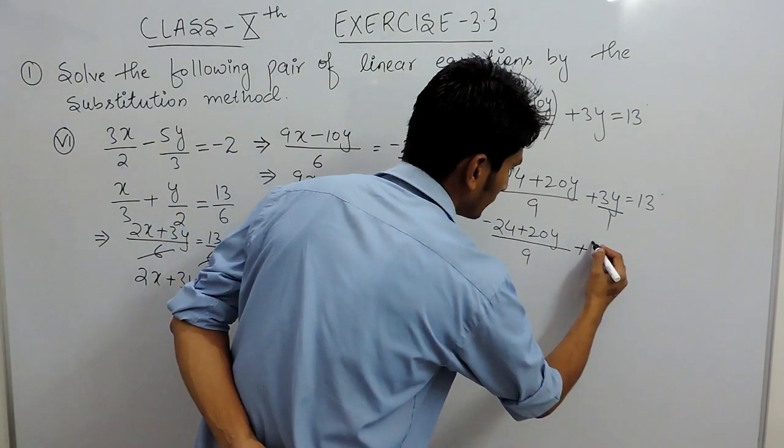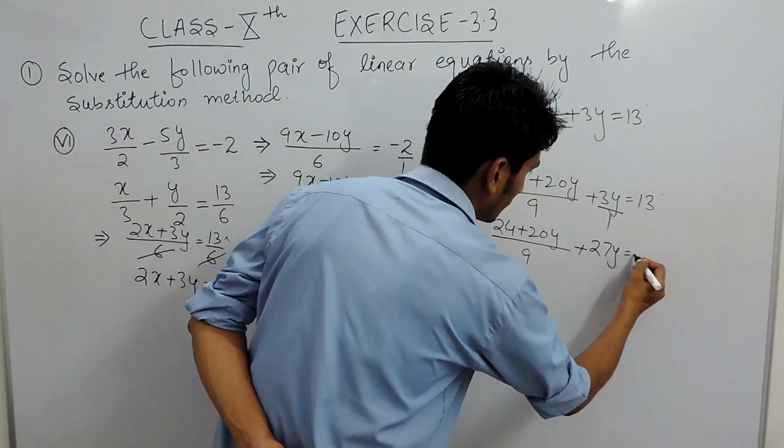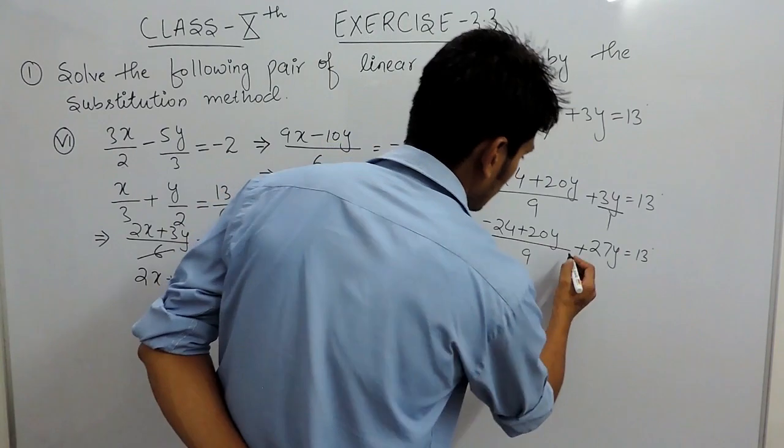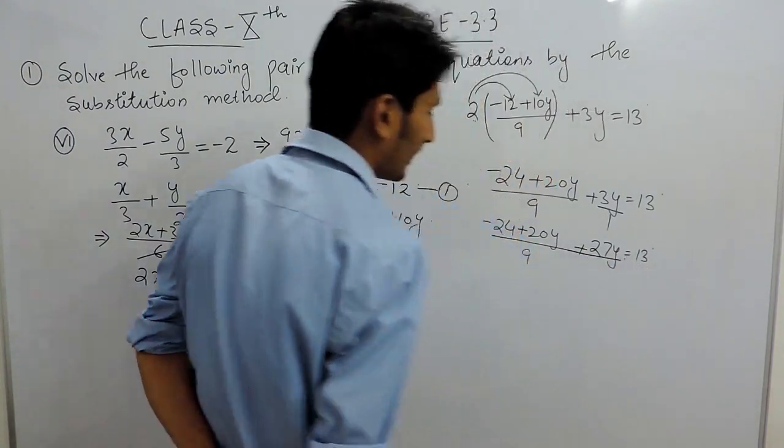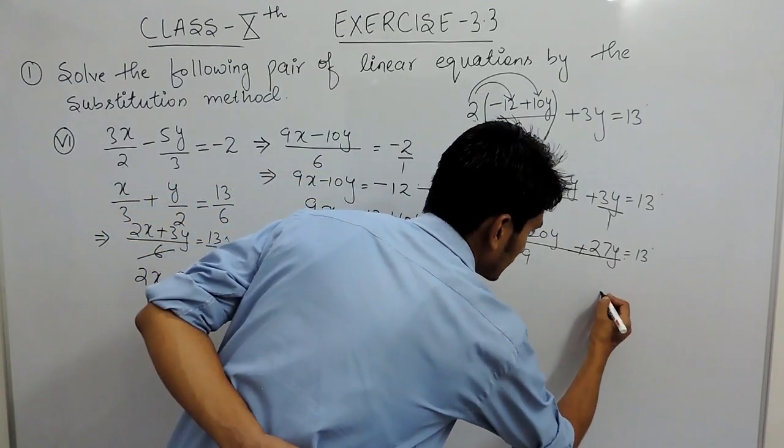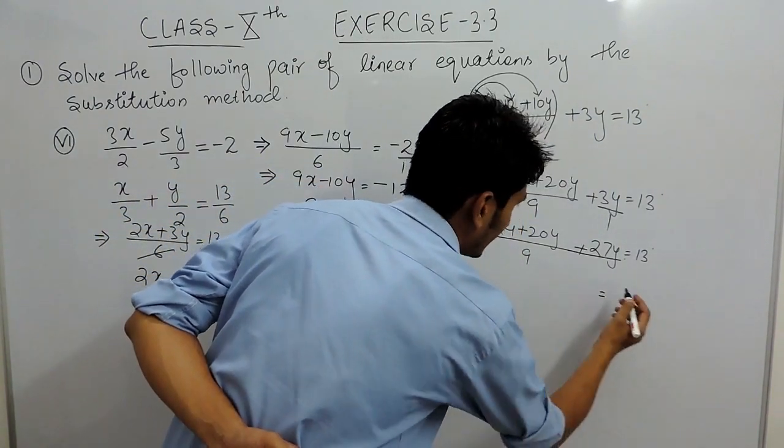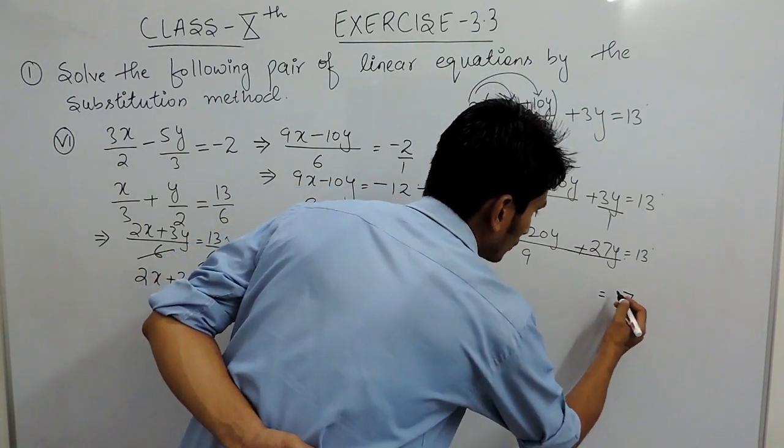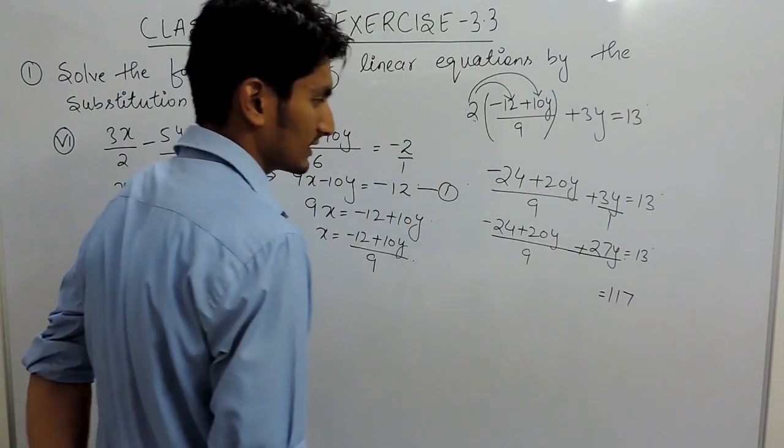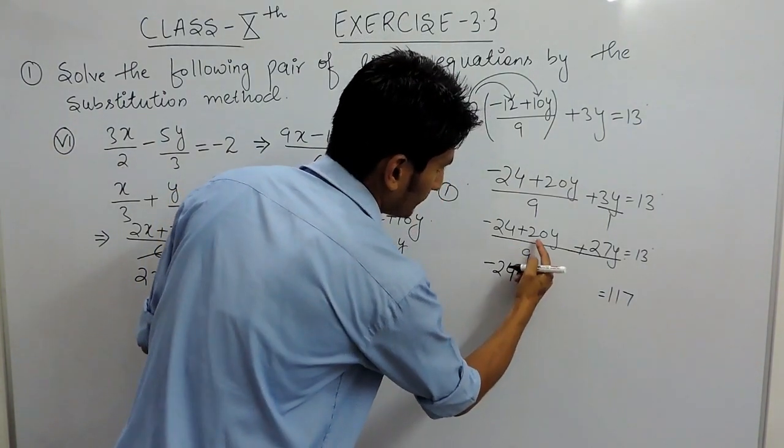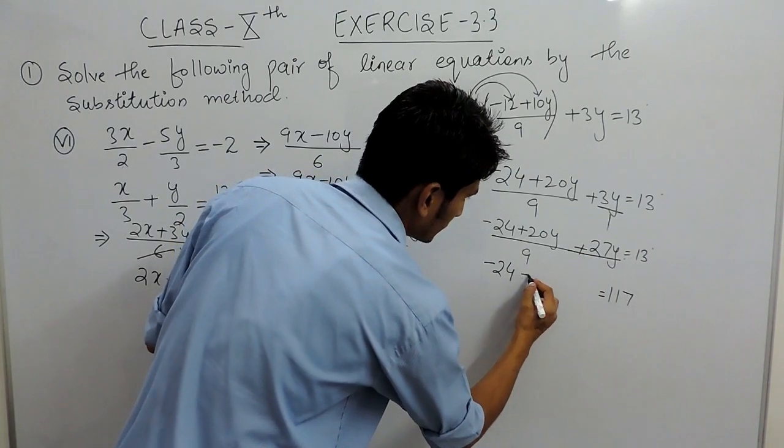Now this is whole upon, now you can cross multiply it, so 13 into 9 is basically 9 into 3 is 27, 9 into 1, so this is 117, and this is minus 24 and plus 20y plus 27y is